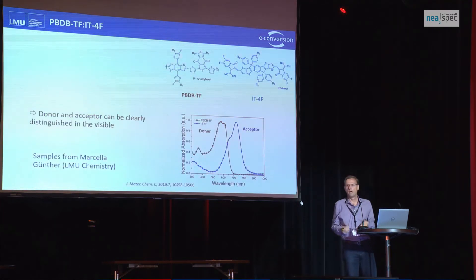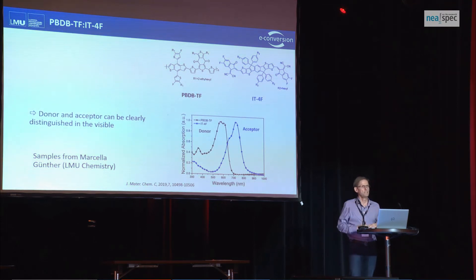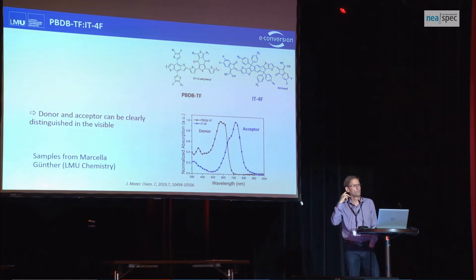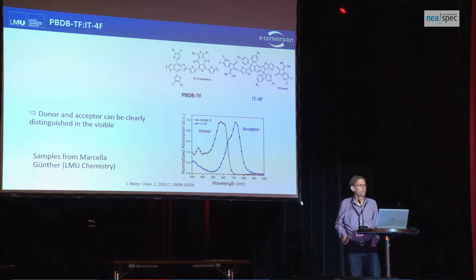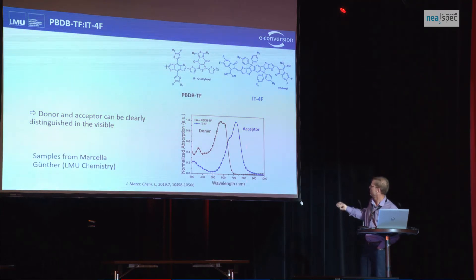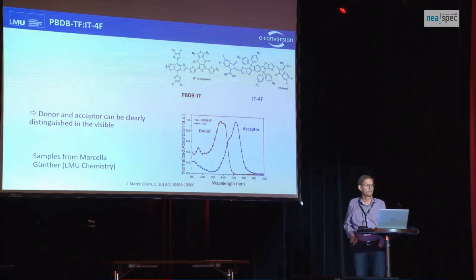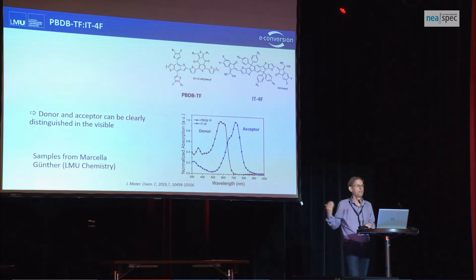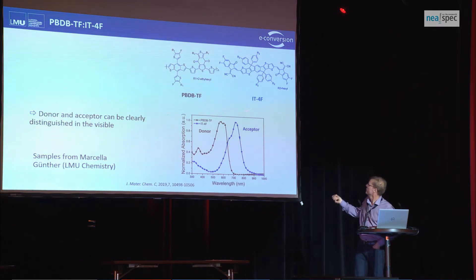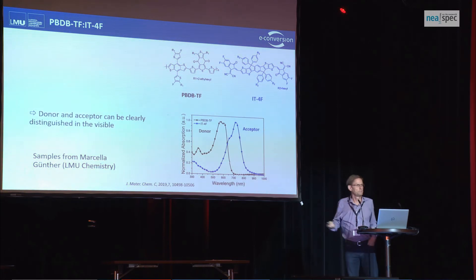In the IR it's very difficult to distinguish the two because the small molecule signal contribution is always much stronger than the one from the donor polymer. On the other hand, in the visible spectrum the two are nicely separated. Probing in the red range you would primarily see the acceptor, versus in the green you would probe the donor. So we set out doing monochromatic imaging in the visible, now in a slightly different sample, to see if there's a spatial contrast.